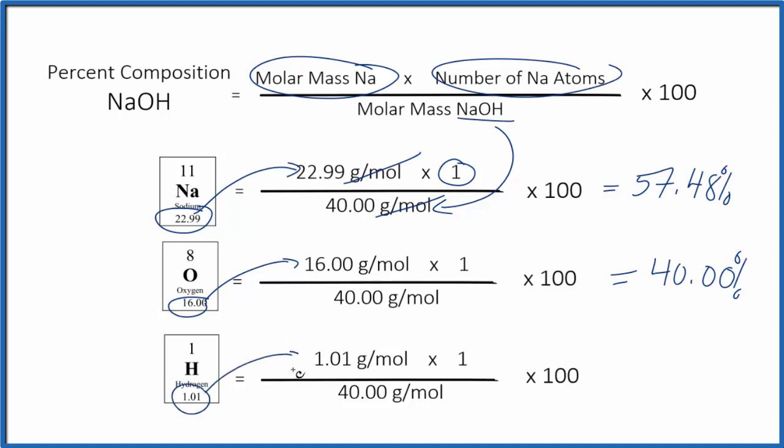So hydrogen, 1.01, we only have one of them up here. Then we divide that by the molar mass of the entire compound, multiply by 100 to get 2.53%.